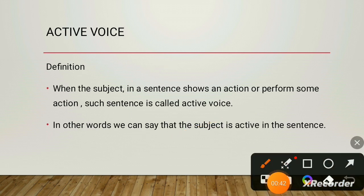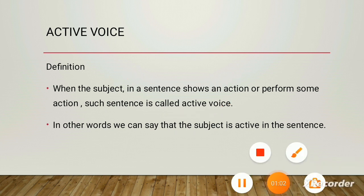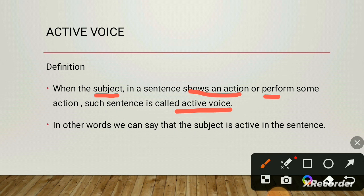When we define active voice, we say that when the subject in a sentence shows action or performs some action, such a sentence is called active voice. The important things we need to focus on: the subject shows an action or performs some action in a sentence. That is called the active voice — meaning when the subject, the one doing the work, is active in the sentence and is doing some activity himself.